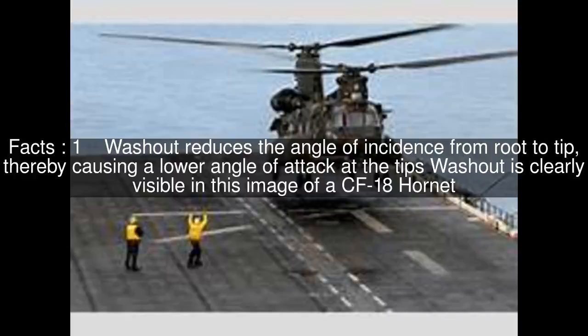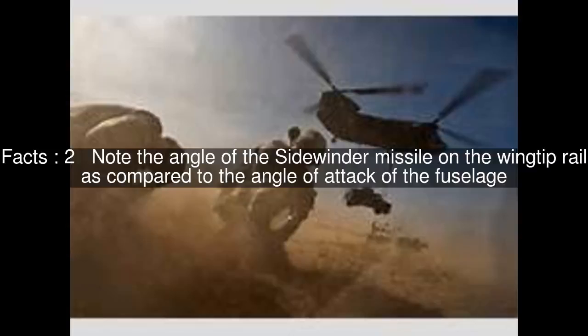Washout reduces the angle of incidence from root to tip, thereby causing a lower angle of attack at the tip. Washout is clearly visible in this image of a CF-18 Hornet. Note the angle of the Sidewinder missile on the wingtip rail as compared to the angle of attack of the fuselage.